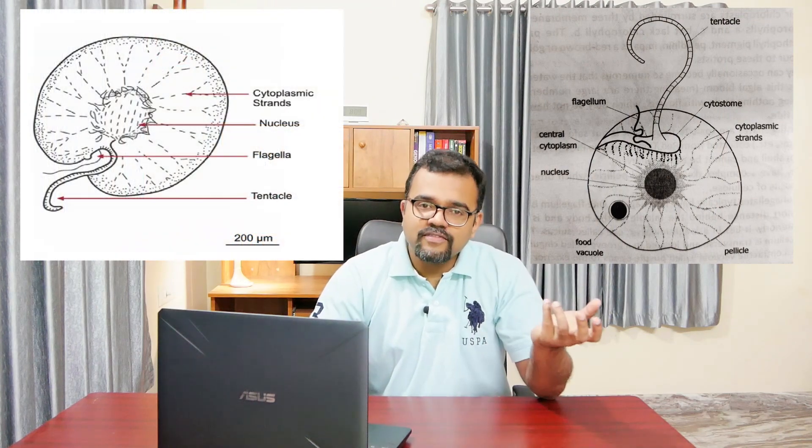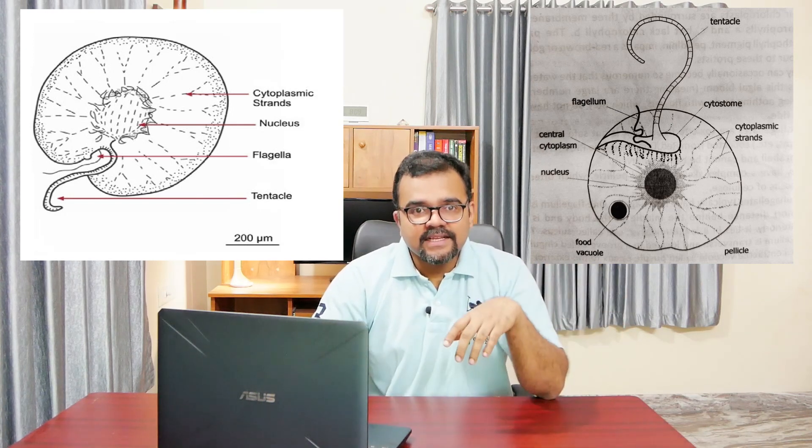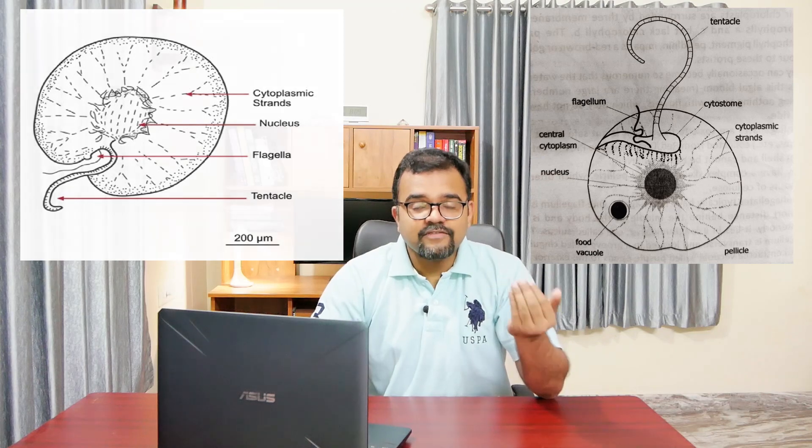The body of Noctiluca is transparent, spherical, and about 1.5 mm in diameter. It is lined externally by a pellicle. The cytoplasm is highly vacuolated and differentiated into an outer ectoplasm and an inner endoplasm. The pellicle bears a groove called the cytostome from which originate two flagella. One flagellum is long, stout, and transversely striated and is called the tentacle. The other flagellum is small and delicate.